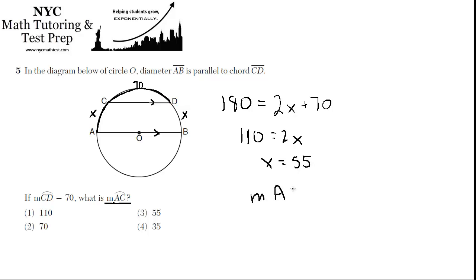So the measure of arc AC equals 55 degrees, and the best choice is 3.